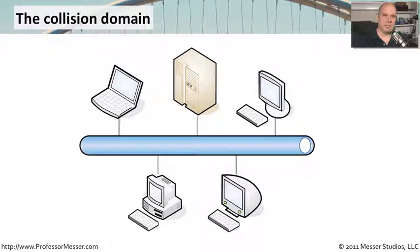Here's a graphical representation of one collision domain. You have one hub that's represented in the middle by this long ethernet cable. And everybody is plugged into this ethernet connection. And if any of these stations transmit, everybody else on this shared medium gets to hear that.